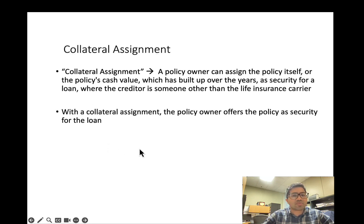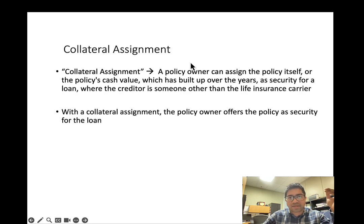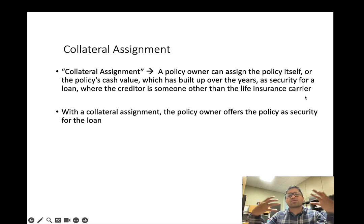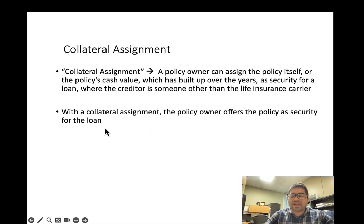You can also use the policy as collateral — known as collateral assignment. In a policy loan you borrow from the insurance company, but with collateral assignment you borrow from a financial institution. The policy owner assigns the policy or its accumulated cash value as security for a loan from a creditor other than the insurance company. You can use the policy as collateral, go to a bank, and borrow money from them.